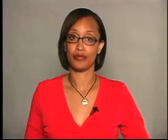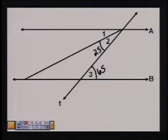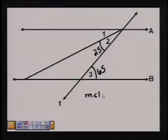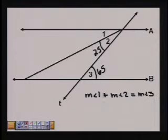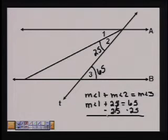Let's look at a second example. Since we know that angles 1 plus angle 2 and angle 3 are alternate interior angles, we know they are congruent. We are also given that angle 3 is 65 degrees and angle 2 is 25 degrees, so find the measure of angle 1. Since we know they are congruent or equal, we can say measure of angle 1 plus 25 is equal to 65. We subtract 25 from both sides and we get measure of angle 1 is equal to 40 degrees.